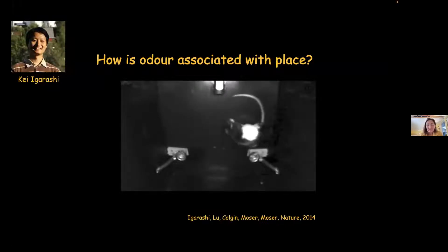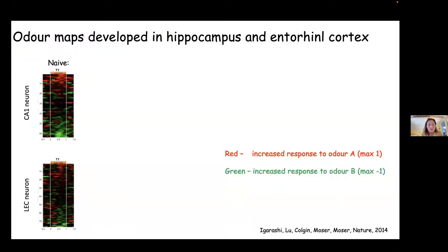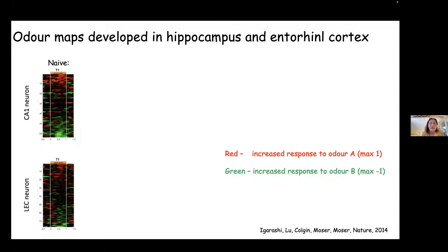So what could we use this information for? We now have an animal that was naive but became trained to do this task, reaching only 15% errors at the asymptotic level. We recorded CA1 neurons in the hippocampus and in the lateral entorhinal cortex, which receives odor inputs.